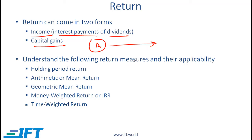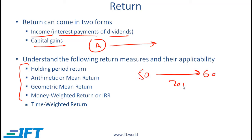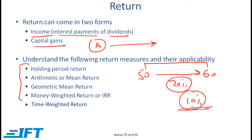You need to understand the following return measures and their applicability. You have seen these in quantitative methods, so most of the material here will be a review. A holding period return is simply the return over a specified holding period. If you buy a stock for $50 and after two years it goes up to $60, the holding period return is 20%. With a holding period return we always need to specify the period. When the period is not specified, the assumption is that the return is an annualized number.